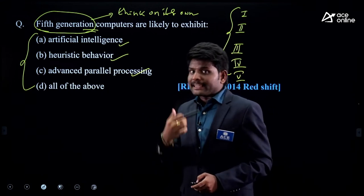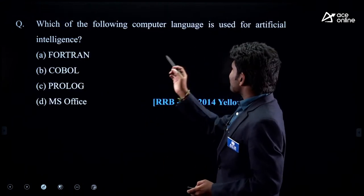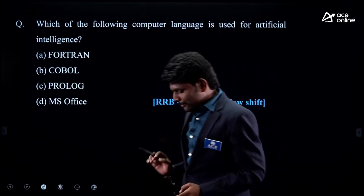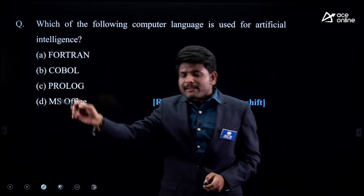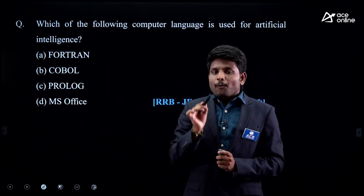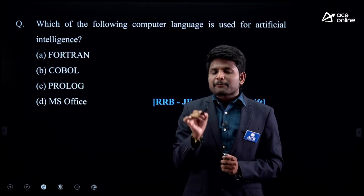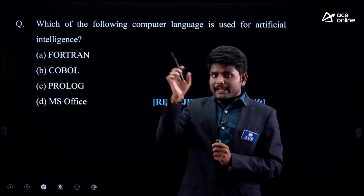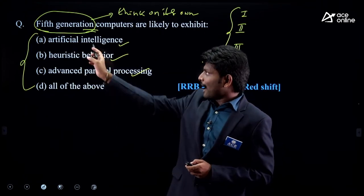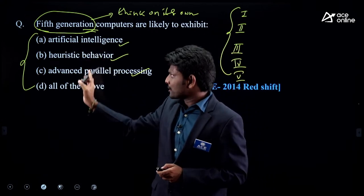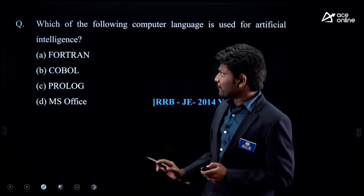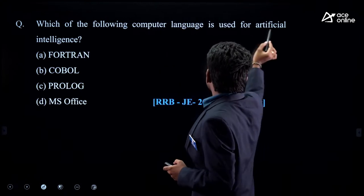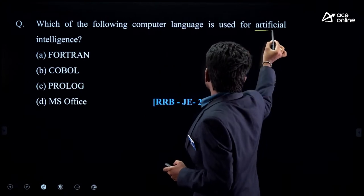Next question: 'Which of the following computer languages is used for artificial intelligence?' In the previous question, the expectation of fifth generation computer was listed: artificial intelligence, heuristic behavior, and advanced parallel processing. Now they are asking: what is the computer language used for artificial intelligence?